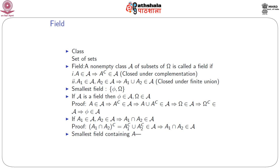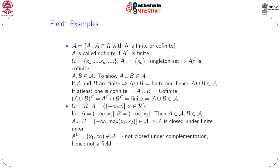We have the smallest field {φ, ω}. Now, we want to find the smallest field containing a set A. Since φ and ω are indispensable, the smallest field containing A consists of four elements: φ, A, Aᶜ, and ω.